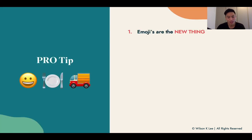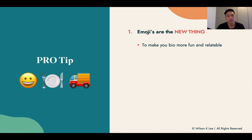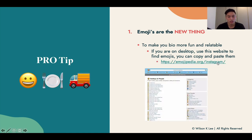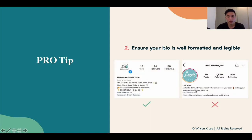Pro tip: emojis. As you can see, we use a lot of emojis because it's a new thing — it's much more engaging and makes it much more fun. If you're using your laptop to create your account and can't find emojis, check out the link provided; you can copy and paste emojis directly into your bio. Also, ensure your bio is well formatted and legible. It's very difficult to read mumble-jumble text; whereas if you structure and format it correctly, you're answering all the questions very quickly and simply. Make sure your bio is structured correctly.